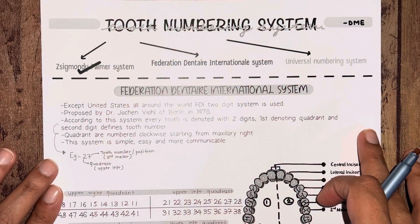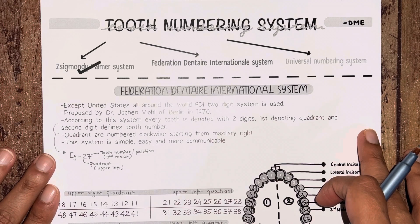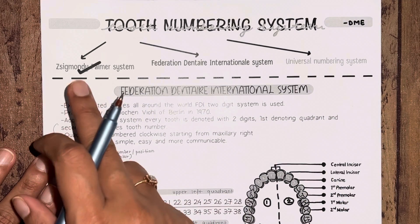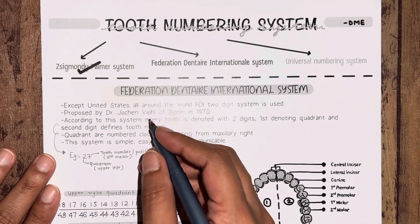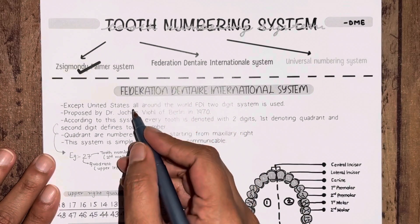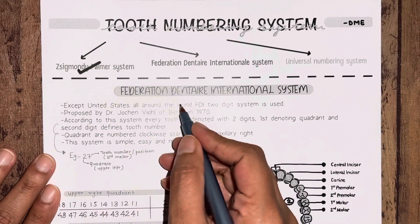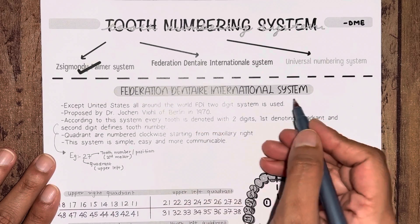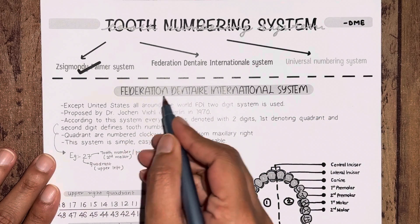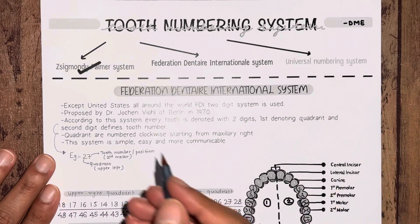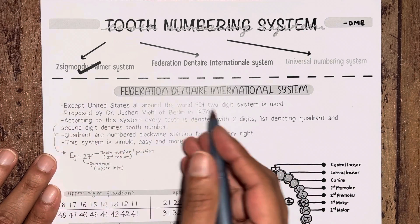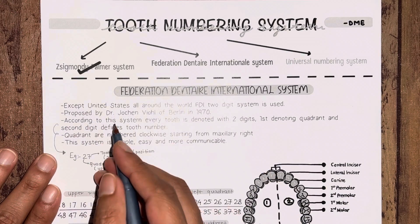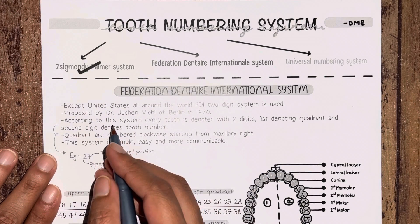Hello everyone, welcome back to Dentistry Made Easy. Earlier we have seen the Zsigmondy-Palmer tooth numbering system. Now moving on towards the next tooth numbering system, that is known as the Federation Dentaire International system — in short, the FDI system. This system is widely used everywhere except in the United States.